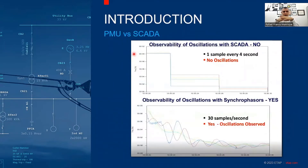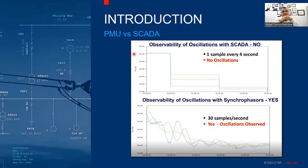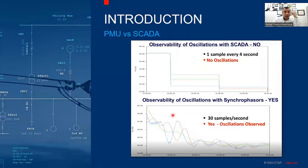These measurements are done with a high sampling rate of 30 to 120 samples per cycle. The question is why is it important to capture voltage and current with such high resolution? PMUs are used to capture power angle variation and predict abnormal conditions. You can see the difference between PMU and SCADA — with 30 samples per cycle you can see oscillations, which is not possible with SCADA.